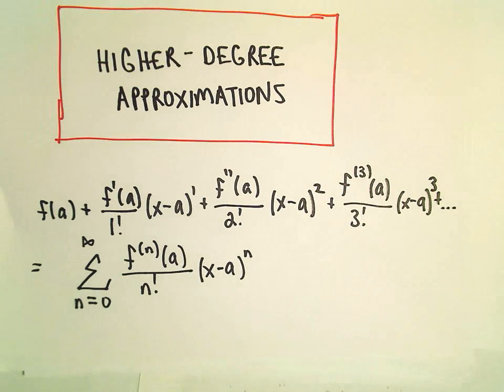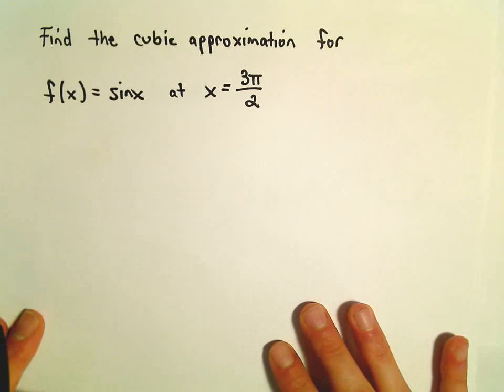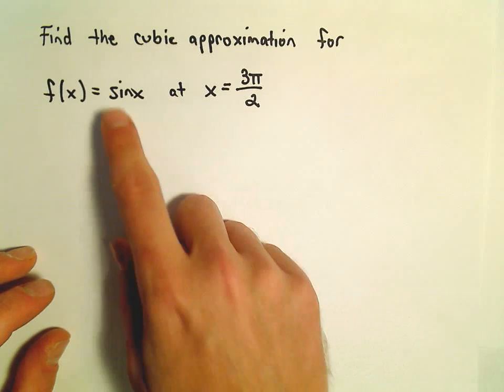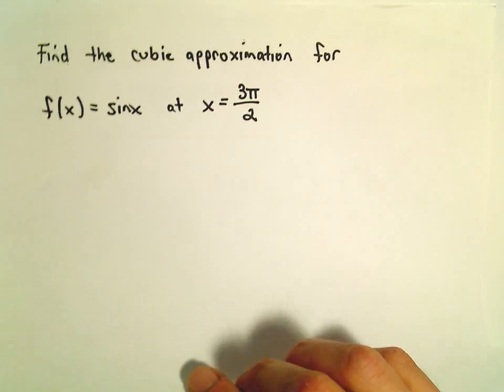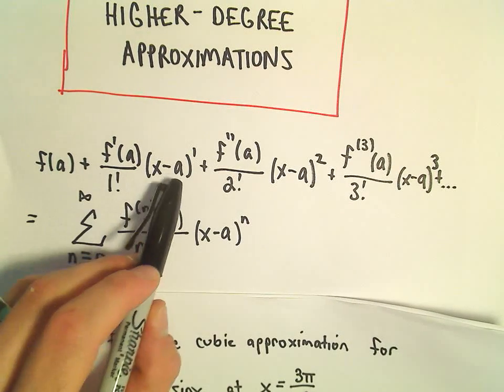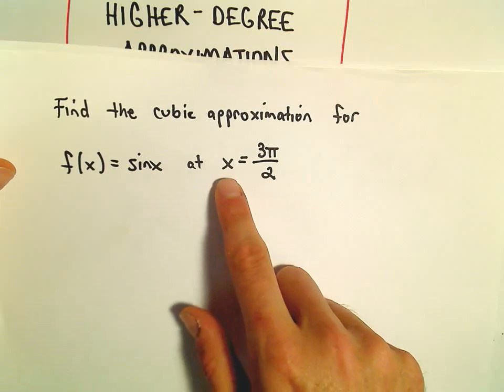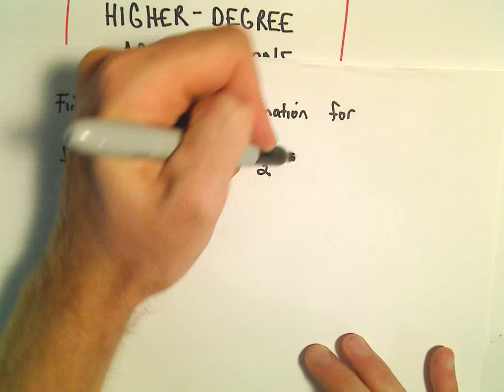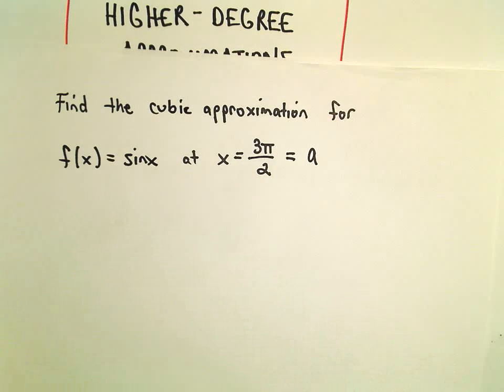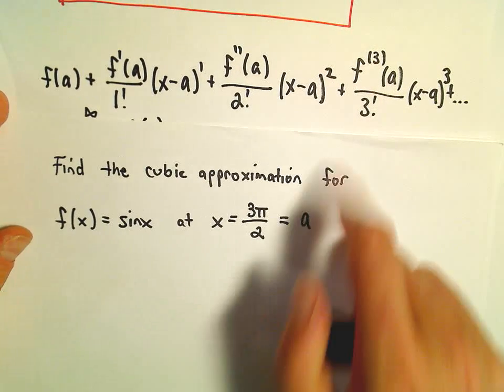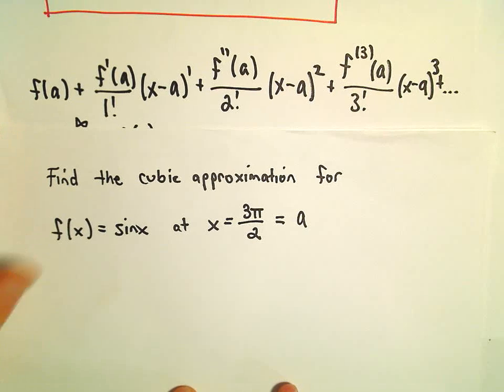We're going to find the cubic approximation for f(x) equals sine x at x equals 3π over 2. The a value that I have here in the formula is going to be equivalent to the x value that they give us. Sometimes people will write it as x, sometimes as a. If we want a cubic approximation, we're going to have to go out to degree 3.